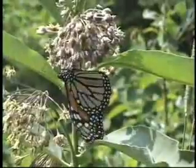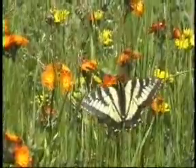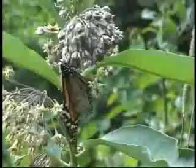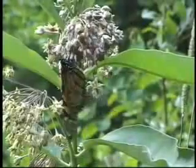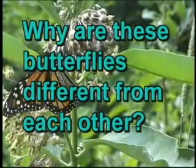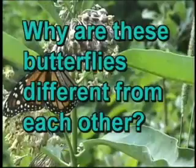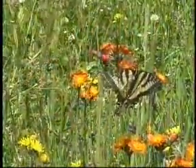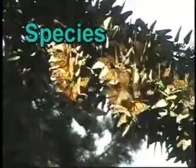This is a monarch butterfly, and this is a tiger swallowtail butterfly. You decide — why are these butterflies different from each other? These butterflies are members of two different species. A species consists of a group of organisms which can successfully reproduce among themselves. Members of the same species possess similar characteristics.